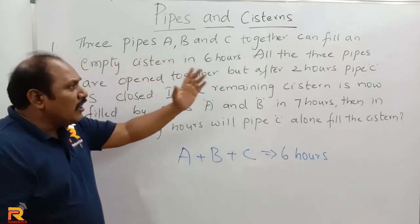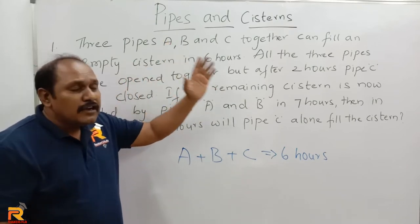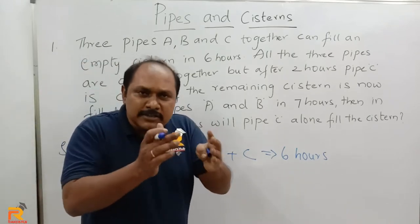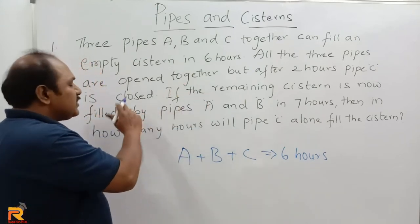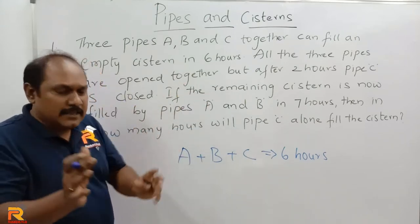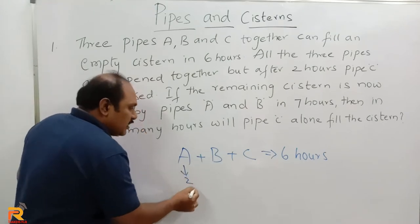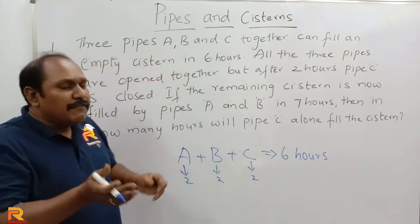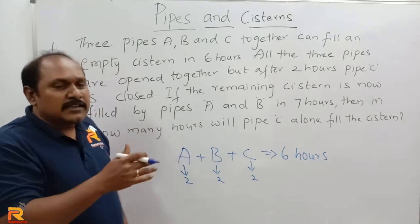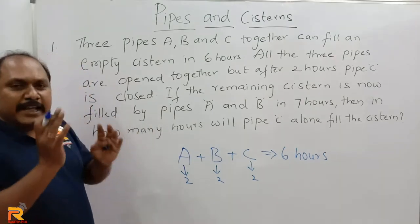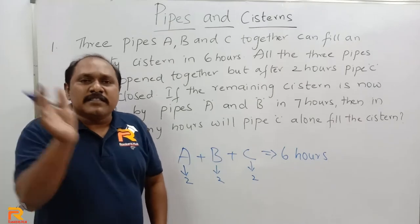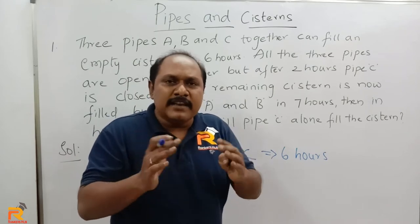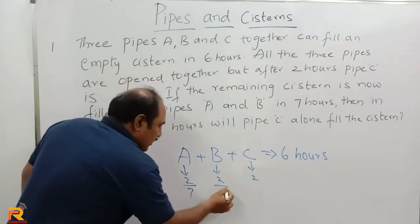Now, what is given in the question? All three pipes are opened together, but after two hours pipe C is closed. So initially A is open for two hours, B is open for two hours, and C is also open for two hours. After that, C is closed. The remaining tank is now filled by pipes A and B in seven hours. So after closing C, A and B fill the remaining system in seven more hours.